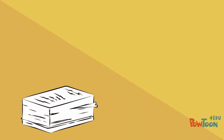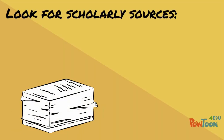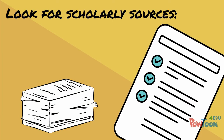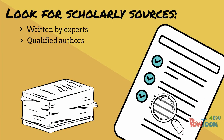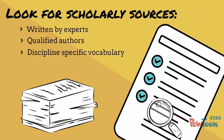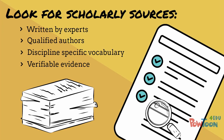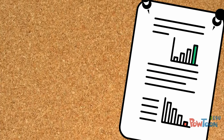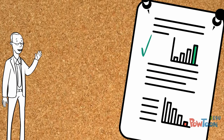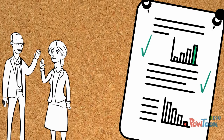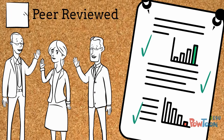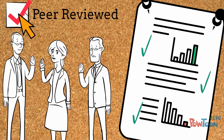Here are some tips for finding good sources. Look for scholarly sources written by experts for other experts. Check the qualifications of the authors — these sources use discipline-specific vocabulary and provide verifiable evidence for their claims. Use peer-reviewed sources; many journals go through an editorial process where other experts review and assess information before it can be published.